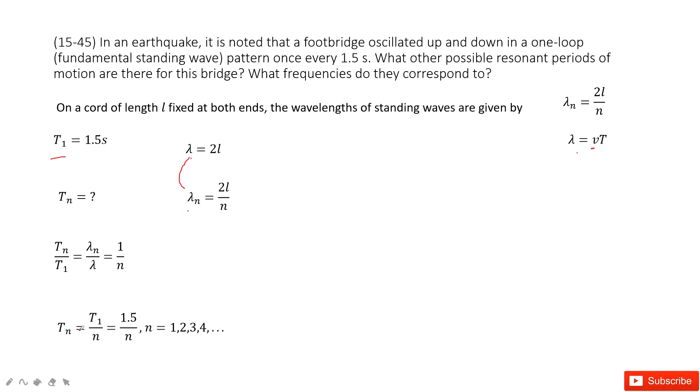So the t_n, the possible frequencies, is just 1.5 divided by n. n can be 1 and integral: 1, 2, 3, 4, 5, and so on.